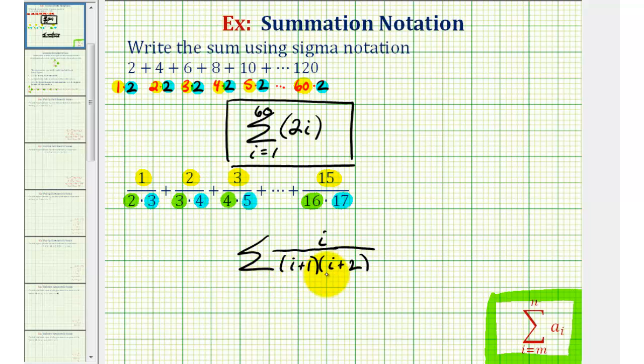Now we can't forget about the index or the values of i that will generate these terms. The lower bound for i, which is where i starts, will be at one. And the upper bound, where i will stop, is at i equals 15.